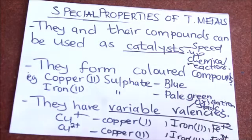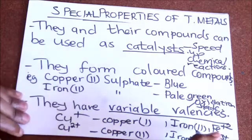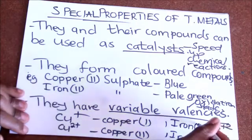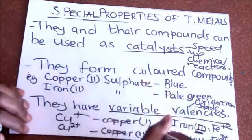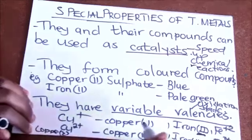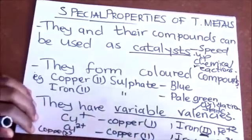If you are to write the charge of transition metals, the charge is normally written in brackets after the name, and you put the charge as Roman numerals. So you write the charge of transition metals as Roman numerals.